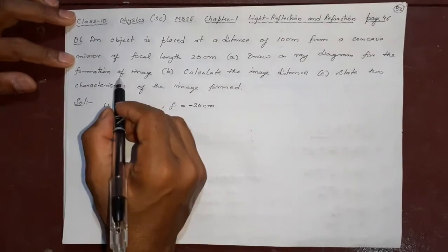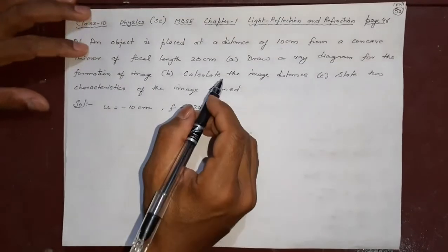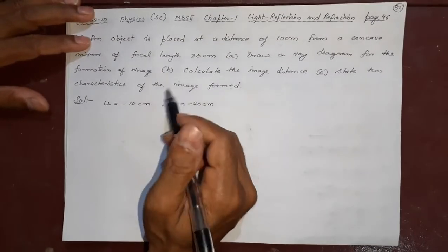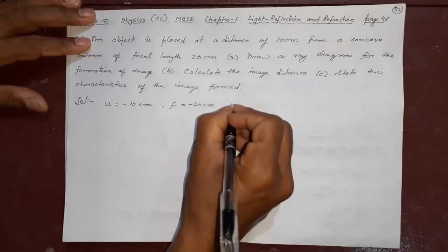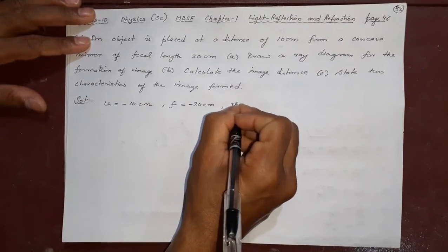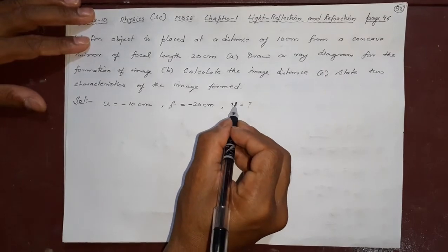Draw a ray diagram for the formation of the image. We will draw the diagram after finding the whole information. So the question number A can be answered after finding the second part. Calculate the image distance. So, you are asked what is V. U is already given. You have to find what is V.